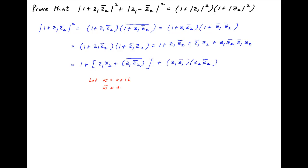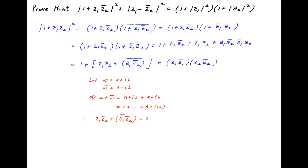Let the complex number w equal a plus ib, where a and b are real. The conjugate of w is a minus ib, so w plus its conjugate equals a plus ib plus a minus ib. The imaginary terms cancel, giving 2a, which equals 2 times the real part of w. Using this result, z1 times the conjugate of z2 plus the conjugate of z1 times the conjugate of z2 can be expressed as 2 times the real part of z1 times the conjugate of z2.